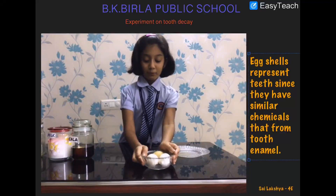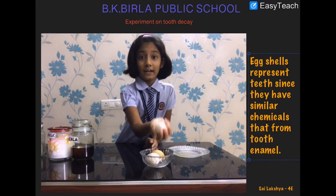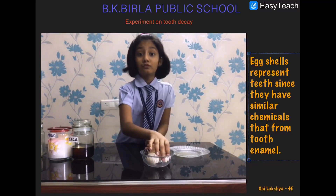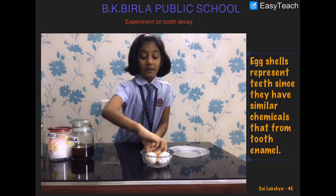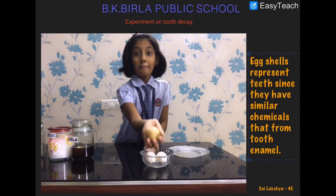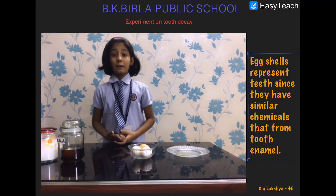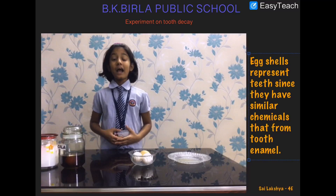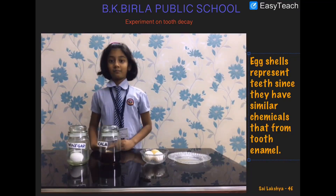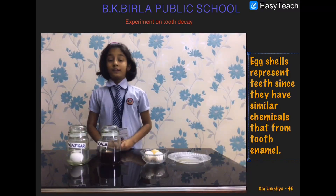I have already put the eggs for one week — see the result. This eggshell is white in colour because of the milk. Milk is good for health. This eggshell is yellow in colour because of the vinegar. This eggshell is brown in colour because of the cola. Eggshells represent the teeth since they have similar chemicals that form the tooth enamel. Decay is caused by acids that bacteria create from sugar. Acids from vinegar and cola are concentrated enough to dissolve and partially damage the shell.